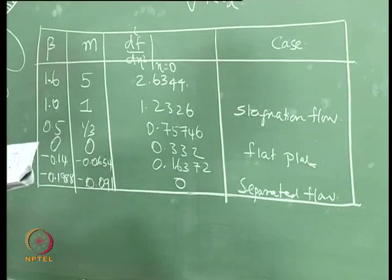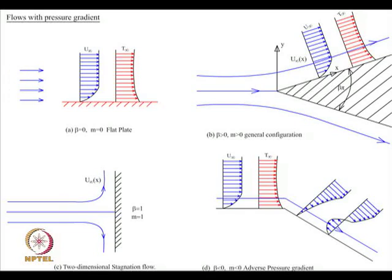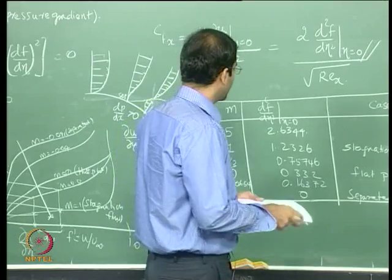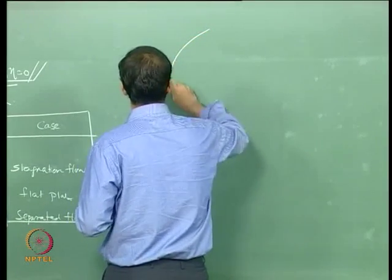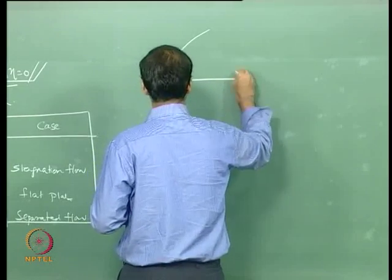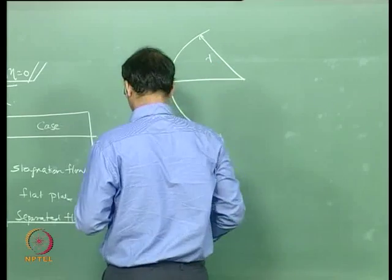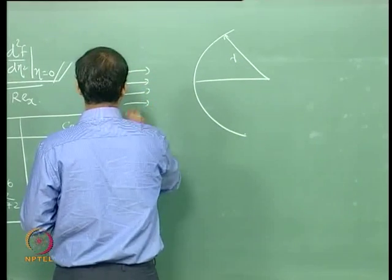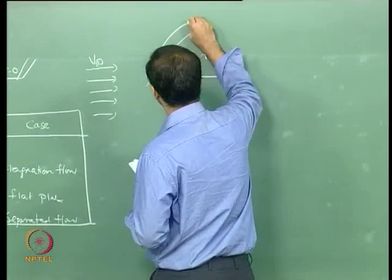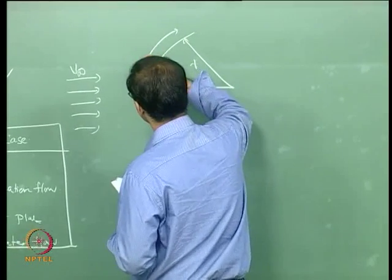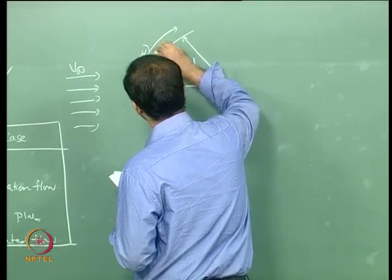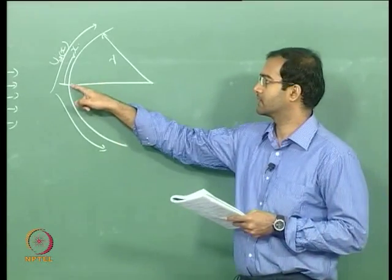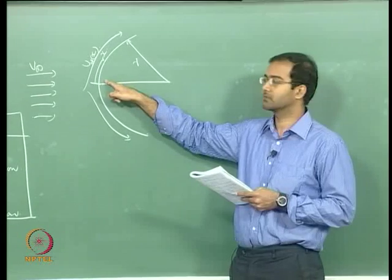This gives a final summary and a special case where we can apply stagnation flow. If you look at flow past a circular cylinder, the radius is R and the approaching free-stream velocity is constant. As the flow travels over the surface it becomes a function of the local coordinate x, where x is the arc length starting from the stagnation point.